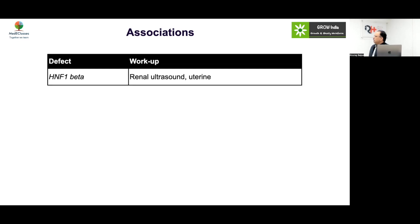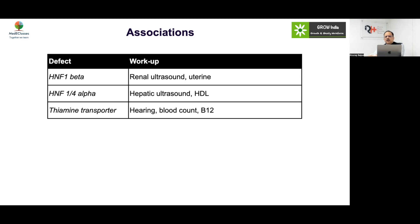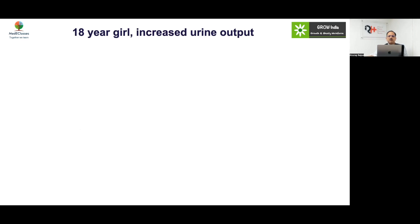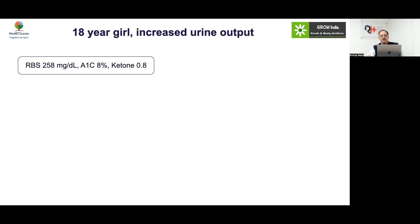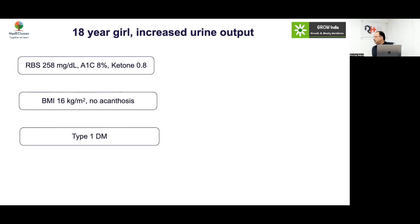For HNF1 beta, always do a renal ultrasound and look for uterine anomalies. For HNF1 and 4 alpha, do liver ultrasound and check HDL levels. For thiamine transporter defect, assess hearing abnormality, blood count, and B12 levels. For Wolfram, check vision, hearing, urine, and blood osmolality. Case: An 18-year-old lean girl with increased urine output, RBS of 258, HbA1c of 8%, no acanthosis — initially diagnosed as type 1 diabetes.